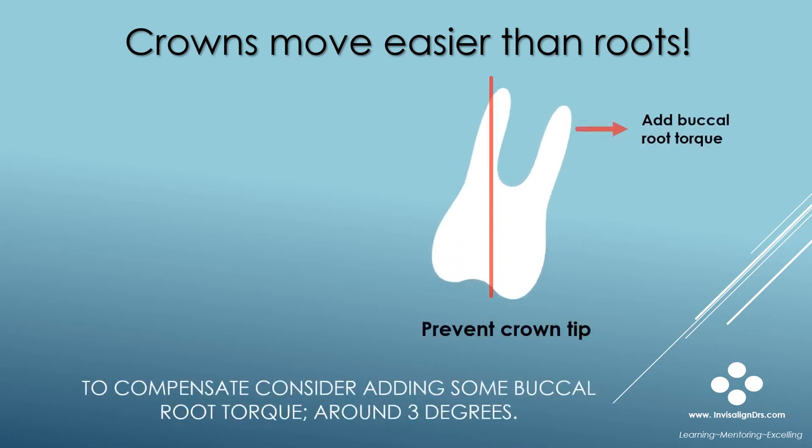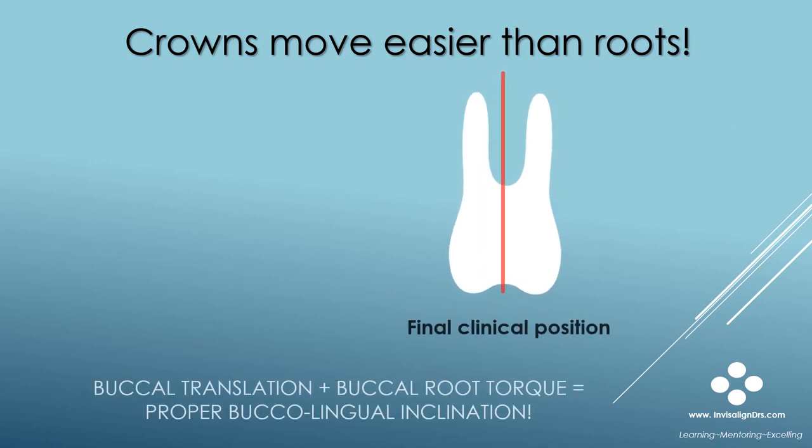To compensate for this undesirable effect, consider adding around 3 degrees of buccal root torque into your treatment plan. Here's the final position — no crown tip, because some buccal root torque was added to compensate.